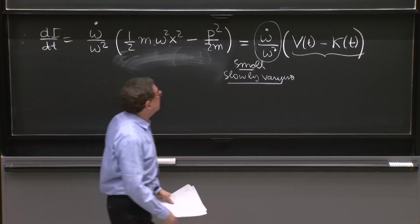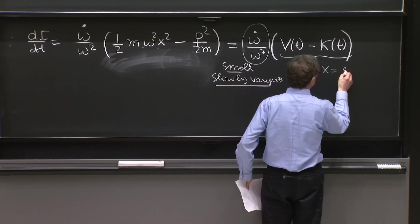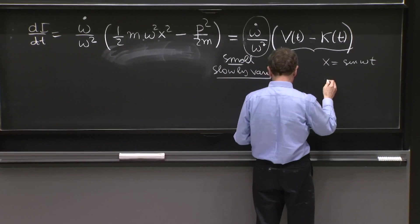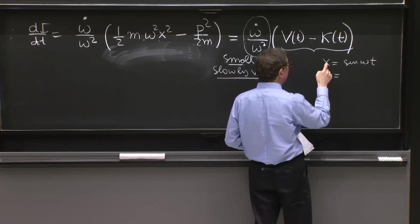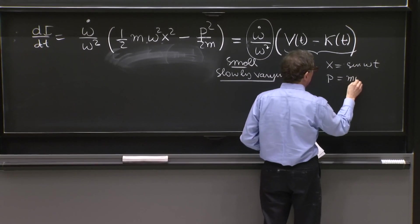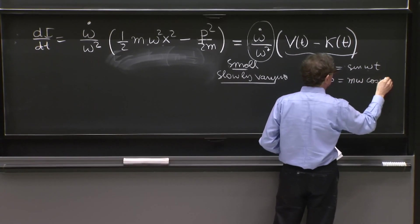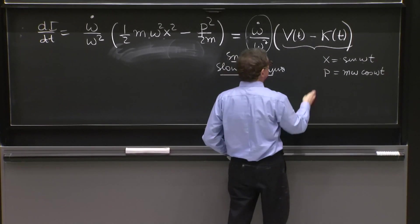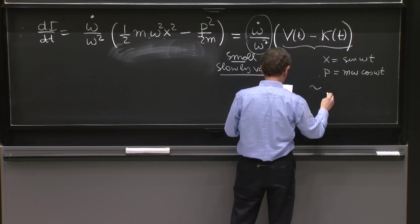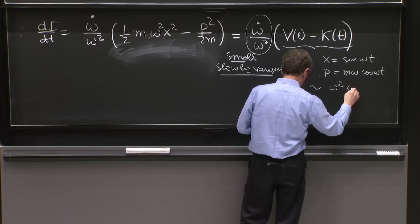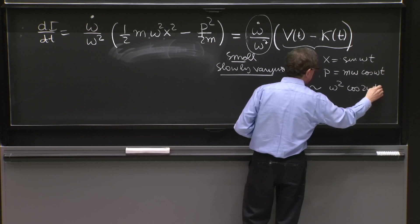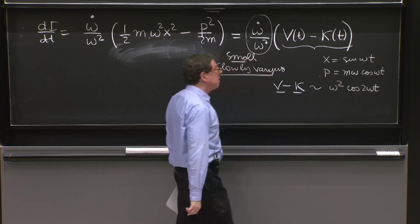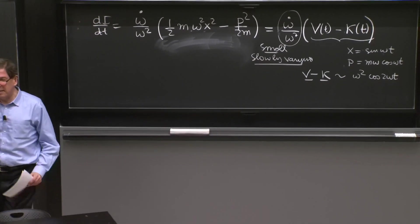Let me remind you here. Suppose you have an oscillation x equals sine omega t. Then the momentum would be m x dot, so m omega cosine omega t. And the kinetic energy minus the potential energy, if you do this little calculation, will go like omega squared cosine of 2 omega t, the V minus K. I leave for you that little calculation. But it will go like cosine of 2 omega t, twice the period. And that thing tends to have a zero average.